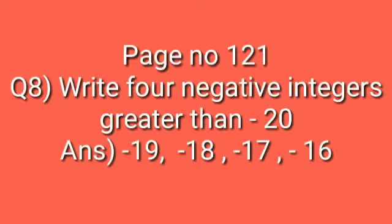Children, the question is: write 4 negative integers greater than negative 20. If the negative sign is there, we know that negative 19 is greater than negative 20, and negative 18 is also greater than negative 20. So you can write negative 19, negative 18, negative 17, negative 16, etc. All are greater than negative 20.